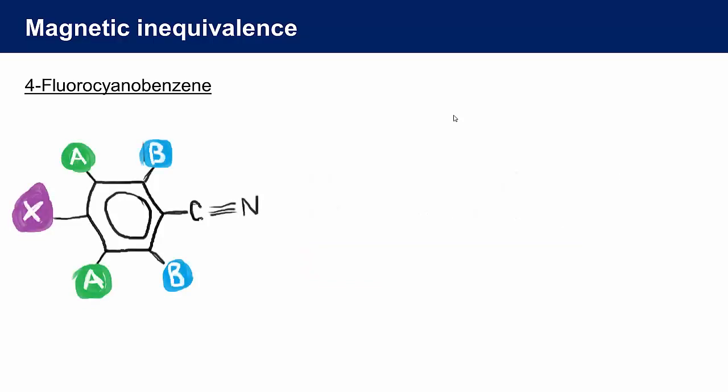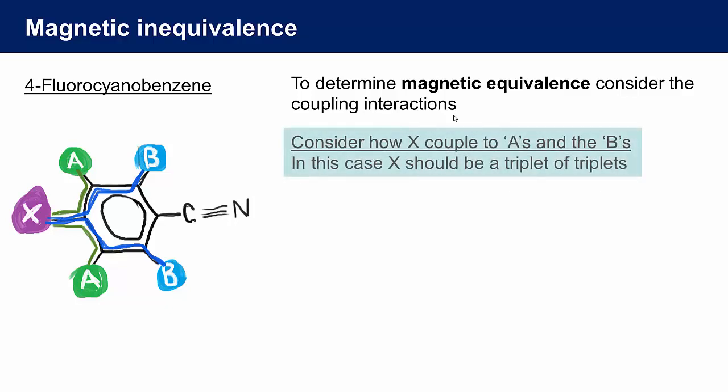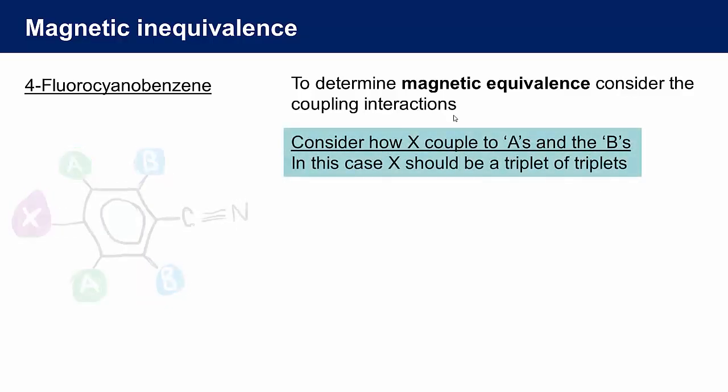We need to look again at the symmetry from the perspective of magnetic equivalence, or if you like, from the perspective of magnetic inequivalence. Let's think about how the X atom couples to the two A atoms. There are two pathways, and they are the same by symmetry. Adding in how the X atom couples to the two B atoms, both the pathways are identical, and so the NMR signal from the X atom should be split into a triplet of triplets, as observed.